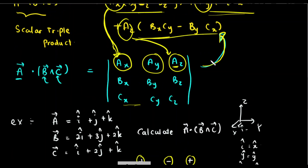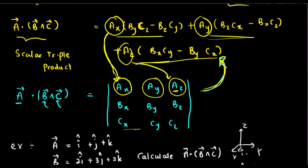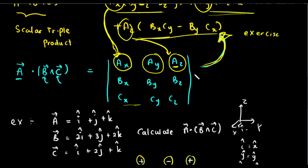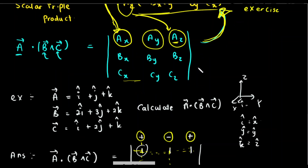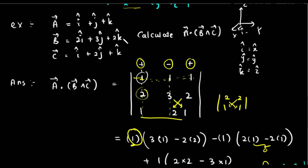This is an exercise for you to verify that the two expressions are equal. When you solve the determinant of this matrix, you get this expression. Now I'm going to show you an example. Given three vectors: A = i + j + k, B = 2i + 3j + 2k, and C = i + 2j + k, calculate A dot (B cross C).